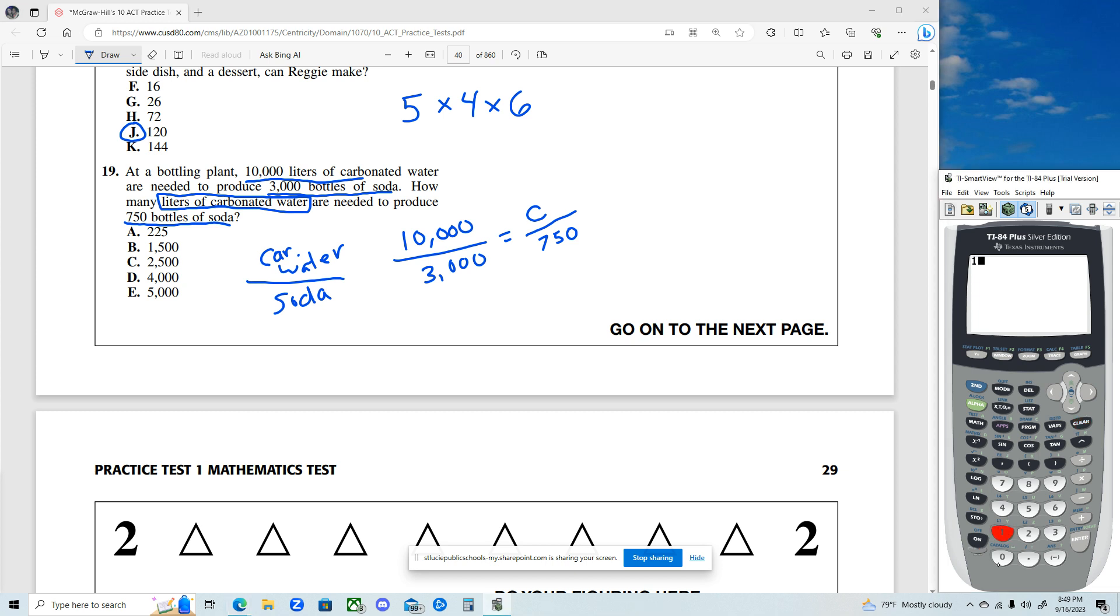10,000, and that should have four zeros, one, two, three, four zeros, times 750.